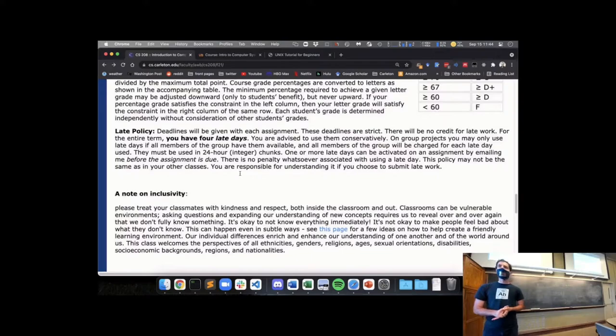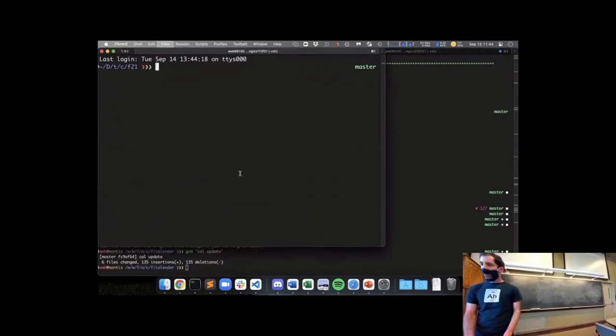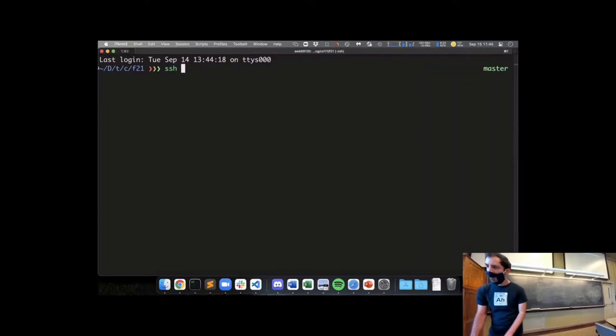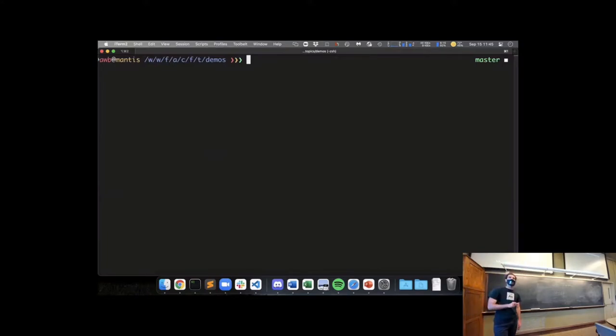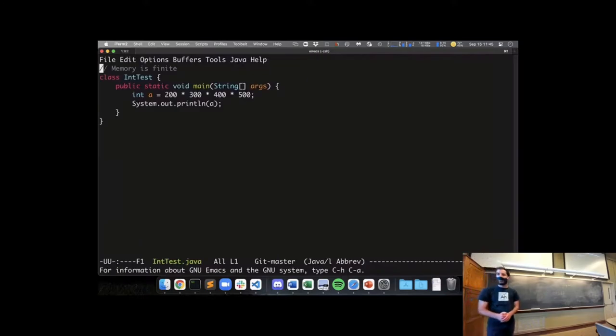All right. Any other questions on this syllabus administrivia stuff? All right. So I want to do some demos, just kind of illustrate the importance of some of the concepts that we're going to look at in this class in a practical sense. So let me bring this up here, make the font readable. All right. Is this a readable font size for the folks in the back? Awesome. All right. So the first thing that I want to look at is a Java program that does something that is pretty boring. It multiplies four numbers together and prints out the result.